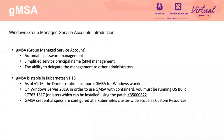The next topic is about GMSA — Group Managed Service Accounts. It can automatically manage a password and simplify a service principal. It is widely used in Windows applications. From Kubernetes 1.16, Docker runtime supports GMSA for Windows worker nodes, and it is stable in Kubernetes 1.18. In Kubernetes, GMSA credential specs are configured as a custom resource. You are recommended to read the official guide on Microsoft to get more information on GMSA.